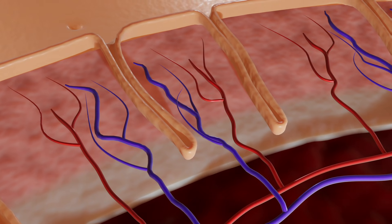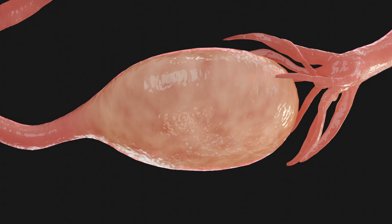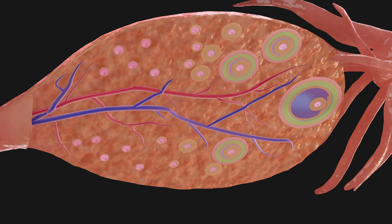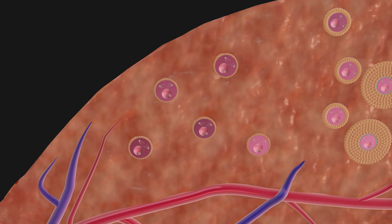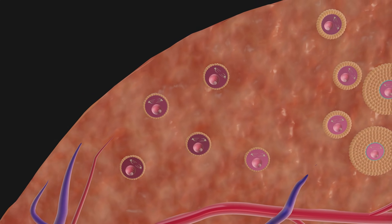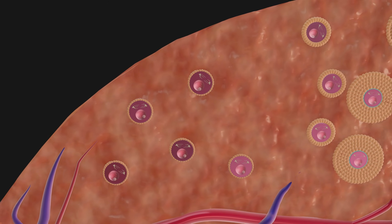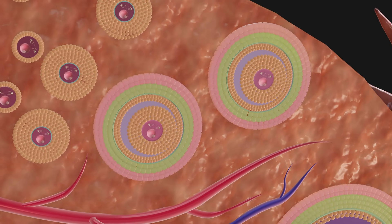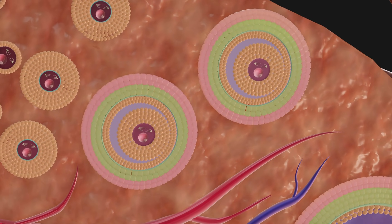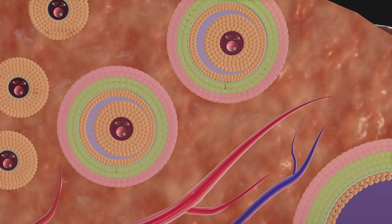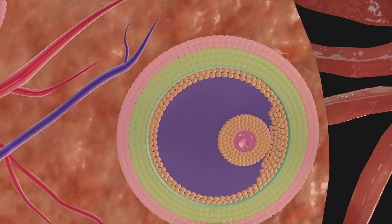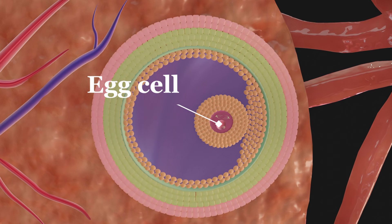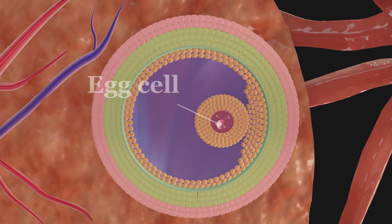At the same time, the ovarian follicles mature in the ovaries. These follicles are divided into different stages according to their development. The primordial follicles are the most common; they have a simple structure and only have one cell layer around the egg cell. Primordial follicles can develop into primary, secondary, and tertiary follicles. One tertiary follicle matures into a Graafian follicle per menstrual cycle with the help of the follicle-stimulating hormone. This stage is characterized by a clearly visible cavity, which is gradually filled with hyaluronic acid and water by the surrounding cells.